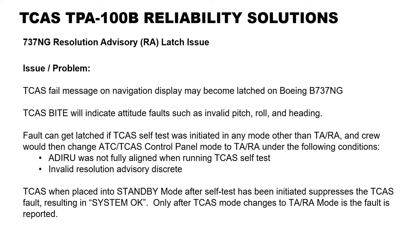TCAS byte will indicate attitude faults such as invalid pitch, roll, and heading. Faults can get latched if TCAS self-test was initiated in any mode other than TA or RA, and crew would then change the ATC TCAS control panel mode to TA-RA under the following conditions.